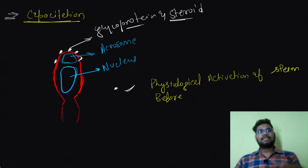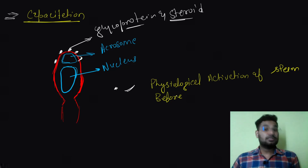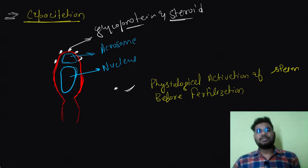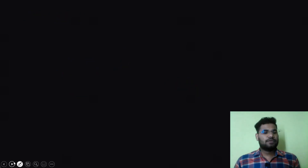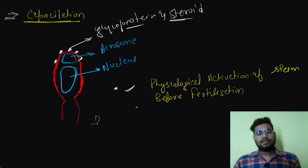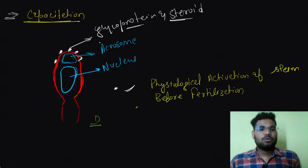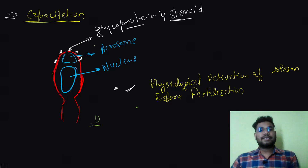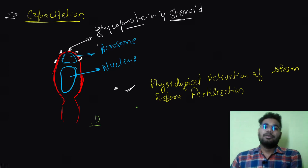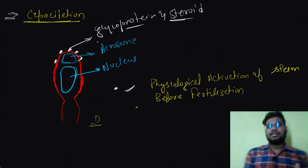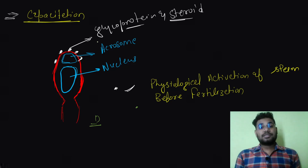What changes occur during capacitation? First, the glycoproteins and steroids on the sperm head are removed within the female reproductive tract. This benefits the sperm because the acrosomal membrane becomes weak. When the sperm then attaches to the egg, it can digest the oocyte layers, because the acrosomal secretions can now be easily released. If the glycoprotein-steroid membrane is not removed, it is difficult for the sperm to release its enzymatic secretions from the acrosome.